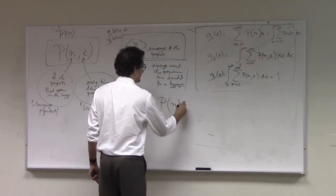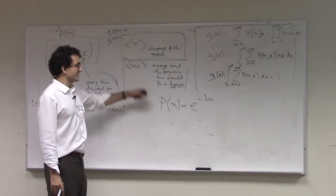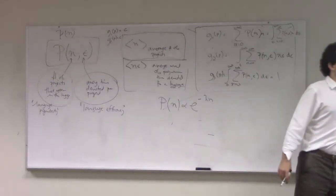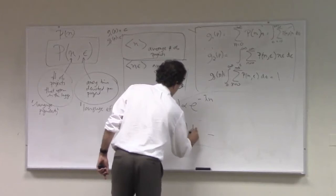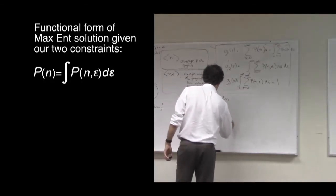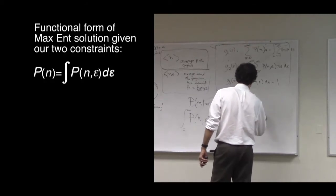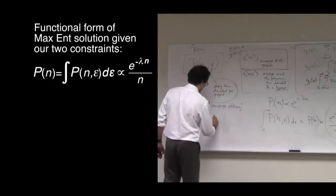Previously, just to remind you, when I did maxent constraining only the average number of projects, my distribution of language popularity looked like an exponential. And we realized that this was a really bad fit. This is the fit that you see on the plot here. But now what we've done is produce a joint distribution with two constraints. One of the constraints is the same. The other is a new constraint that involves that hidden variable, programmer efficiency. And when I integrate out that hidden variable, I get a new functional form for language popularity. In particular, we find that it's proportional to e to the negative lambda n divided by n. This distribution is called the Fisher log series.